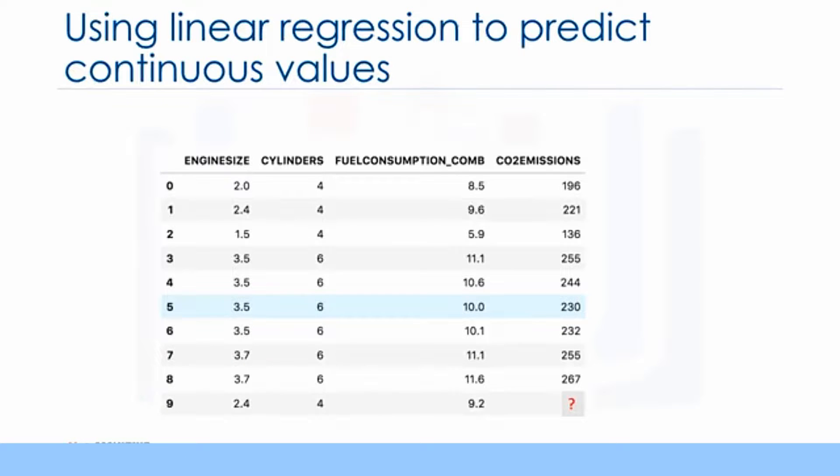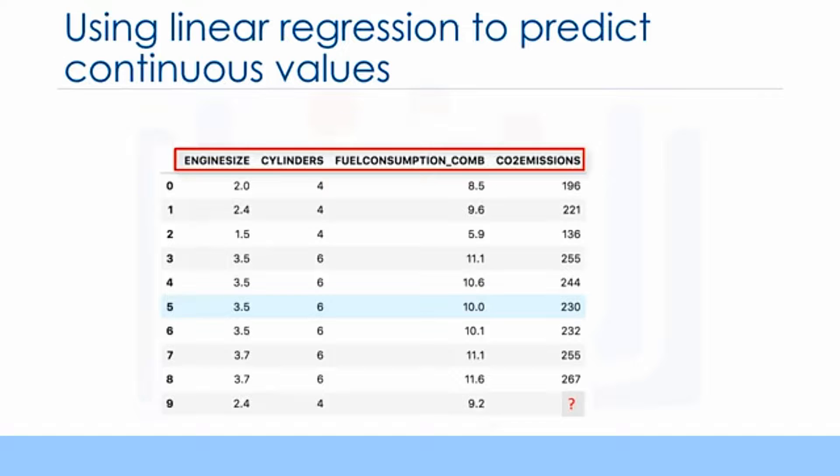Let's take a look at this dataset. It's related to the CO2 emission of different cars. It includes engine size, cylinders, fuel consumption and CO2 emissions for various car models. The question is, given this dataset, can we predict the CO2 emission of a car using another field such as engine size?